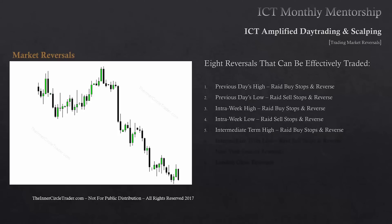Trading intermediate-term highs can be a little tricky because the old highs and buy stops resting just above them require you to look at the context of the marketplace at the time. What's the storyline behind why price would be permitted to trade above that intermediate-term high? Yes, they're looking to take those buy stops, but there's a storyline. Is it pairing up orders to exit longs, or engineering liquidity to put people on the wrong side and then go lower? And obviously the reverse is seen as an intermediate-term low.